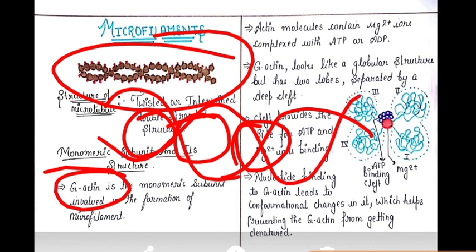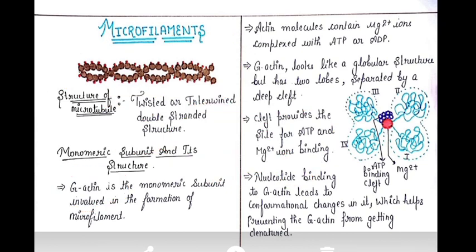F-actin will intertwine and twist to generate a particular structure which we call a microfilament. Before starting with assembly or disassembly, we should know the structure of G-actin — because if your brick is deformed, the house will not be proper. So we see the structure first, and how deformity or denaturation will affect it.